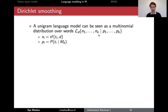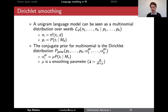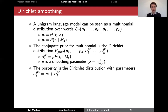So n_i is the term frequency and p_i is the probability of a term in a document — this is the multinomial distribution in standard notation. The conjugate prior for a multinomial distribution is a Dirichlet distribution, with prior parameters that can be set based on the collection frequency of a word with some tuning parameter mu.